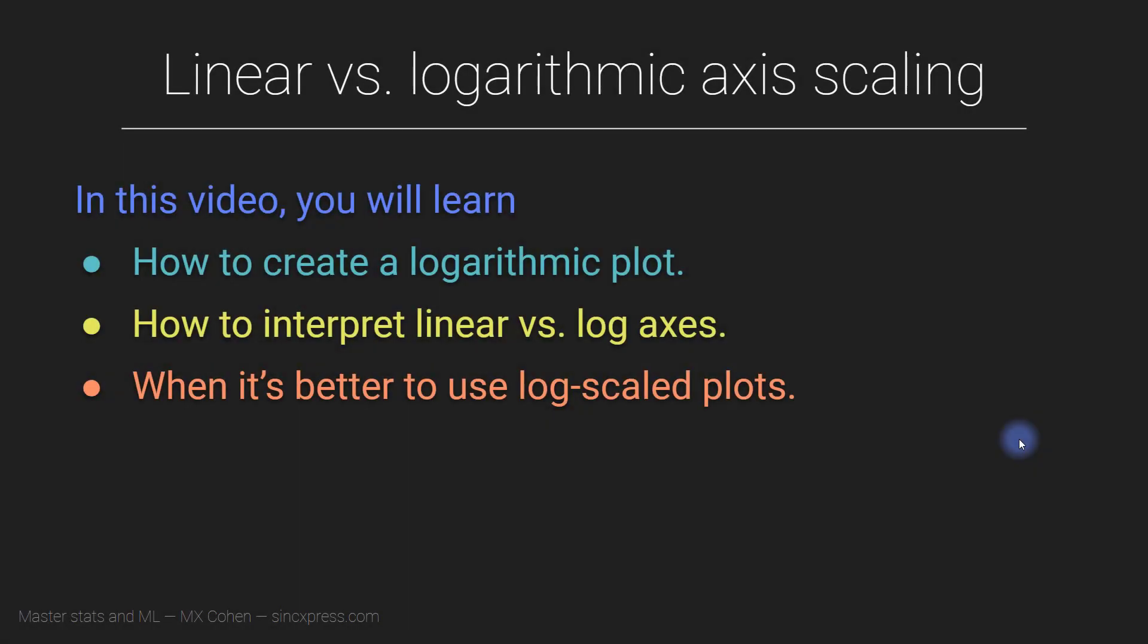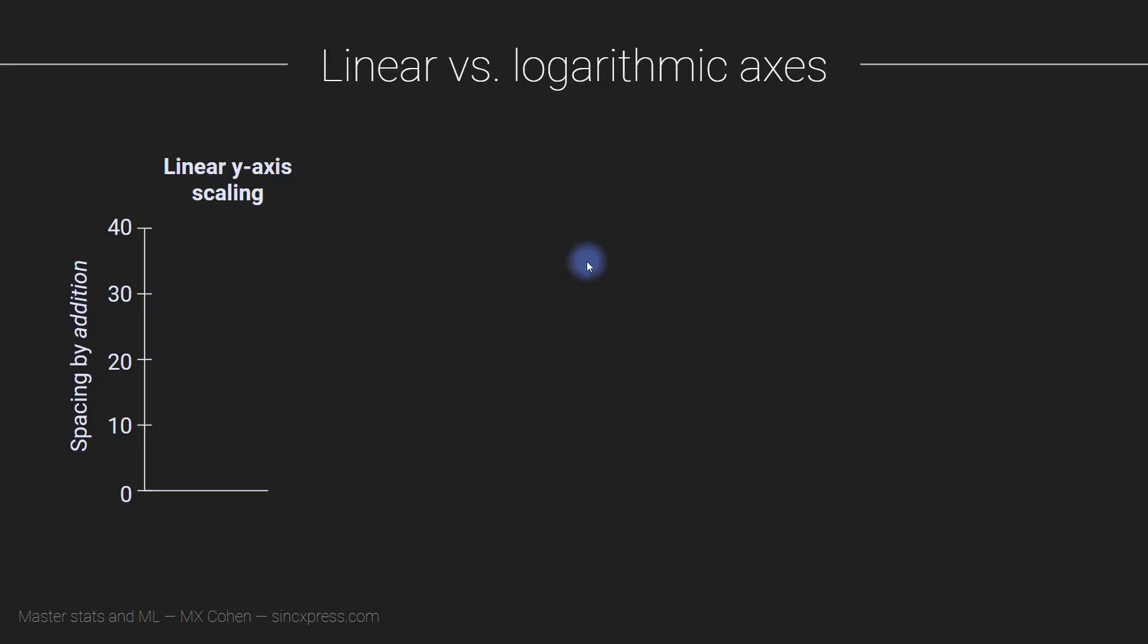I'm now going to tell you about two different ways of scaling the axis in graphs: linear scaling versus logarithmic scaling. Let me start by defining what linear scale versus logarithmic axis scale means, and then I will tell you about some of the advantages and disadvantages of these two ways of scaling plots.